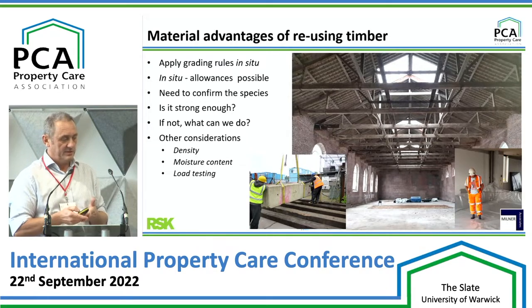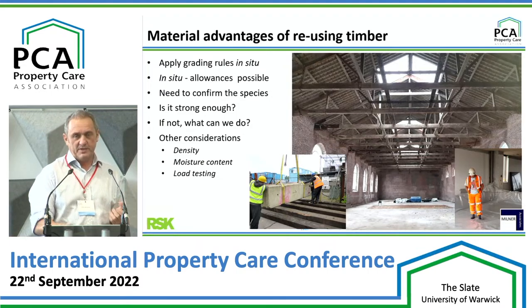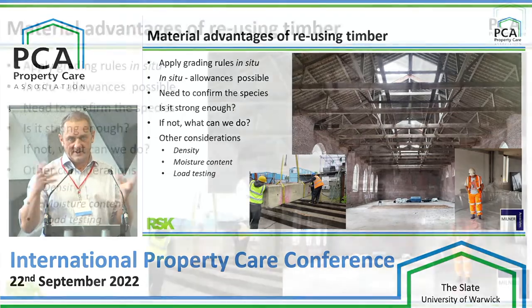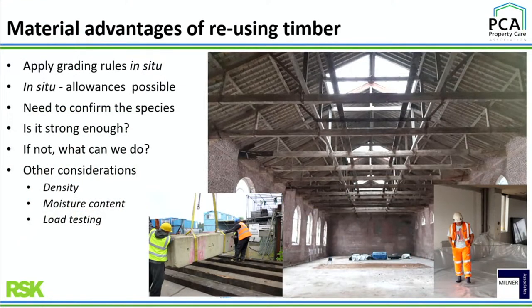So how do we grade timber in situ? We use the grading rules and make allowances - if there's decay or insect attack, consider those as features and work out the reduced section size, then offer a grade on that reduced section size. What is really important: you must confirm the species you've got. I've met enough conservation specialists, engineers, and architects who've gone into a building and declared the timber as pitch pine. The only way you can tell what a timber species is is by taking a sample and putting it under a microscope.